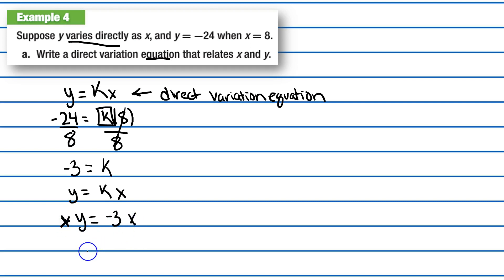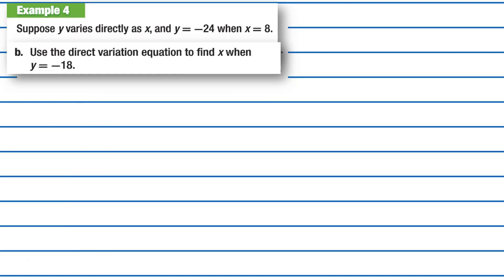Now let's try this next one. Suppose y varies directly as x, which means we're going to be using the direct variation equation. This time we want to find out when y equals negative 18. We use our formula, the equation that we just solved, so y equals negative 3x.